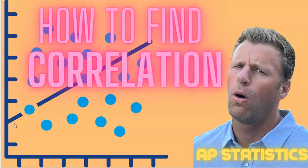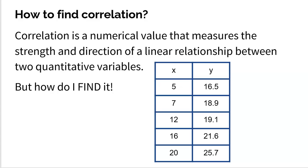What's up everybody? In this video, we're going to talk about how to find correlation. If you don't know what correlation is, please go back and watch my video over correlation. So correlation, recall, is a numerical value that measures the strength and direction of linear relationship between two quantitative variables. Again, a lot of bits and pieces there, please go back and watch the video for correlation if you haven't.